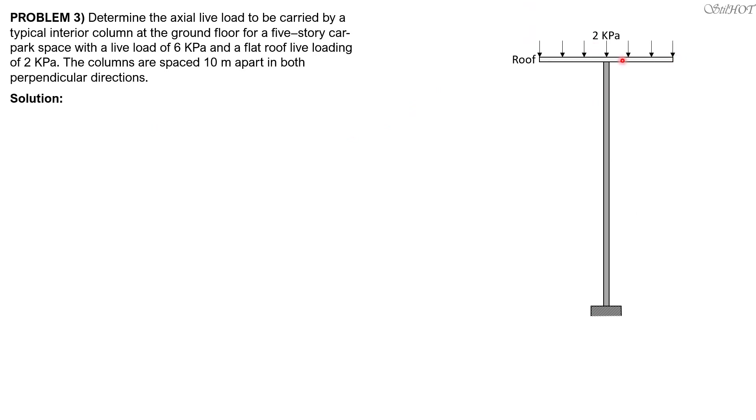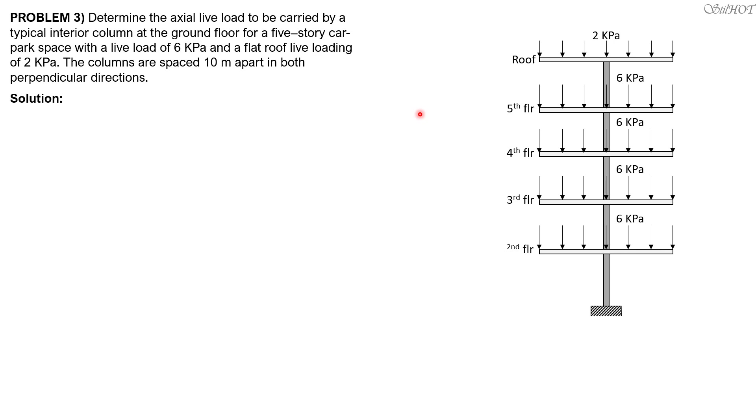This is the 5-story building, that's the roof load, 2 kilopascals. Live load at the 5th floor is 6 kilopascals, cannot be reduced. 4th floor, 6 kilopascals. 3rd floor cannot be reduced. 2nd floor cannot be reduced. Then this is the ground floor column. The load at the ground floor will be resisted by the ground. So all the loads above will be carried by this column at the ground floor.